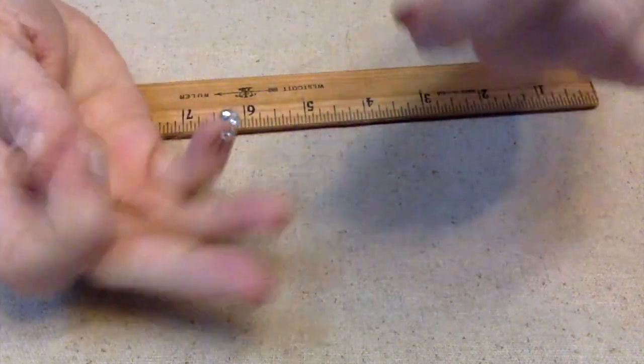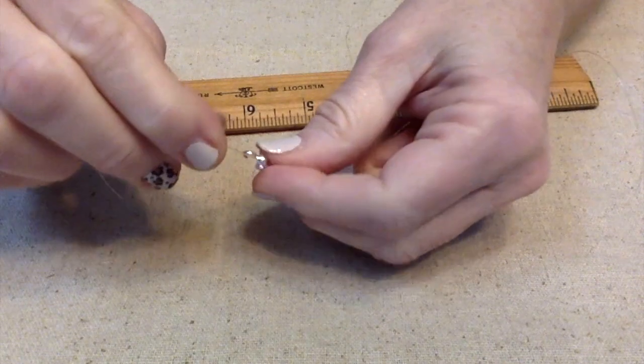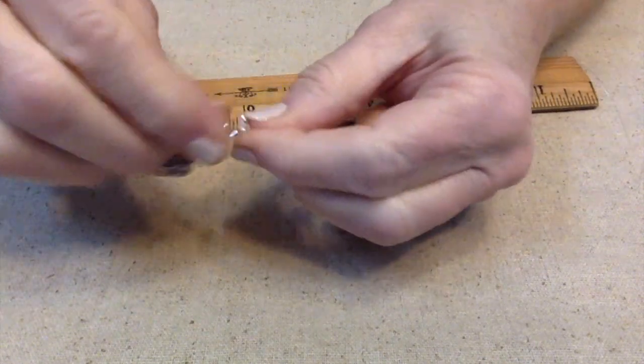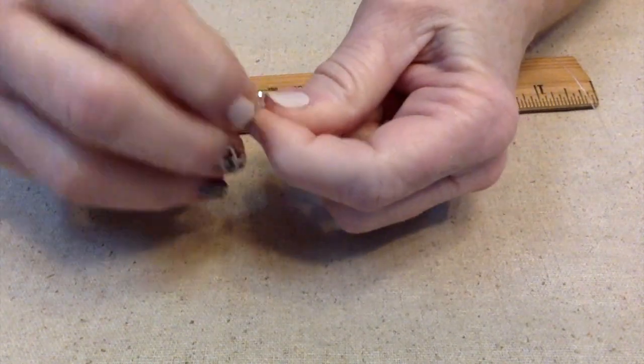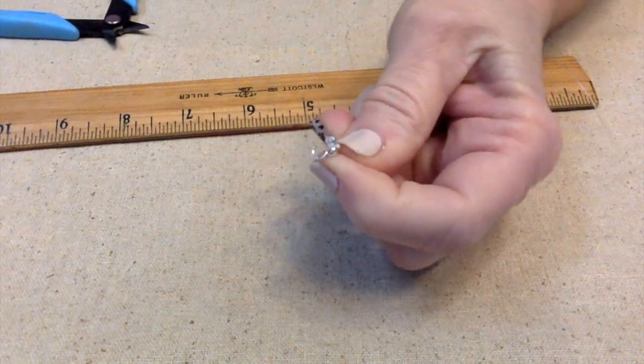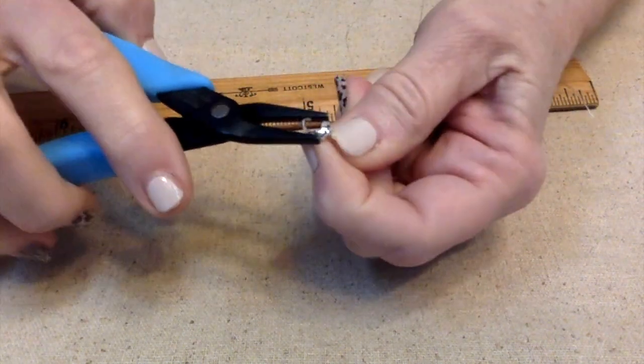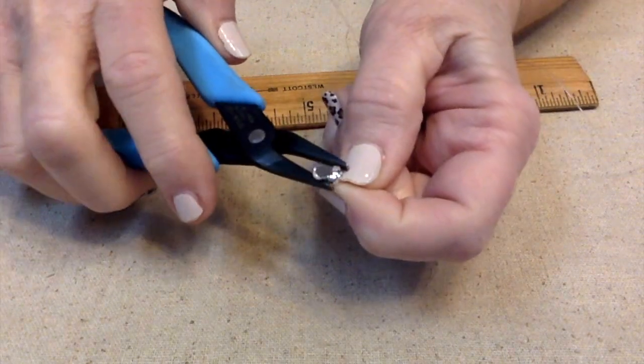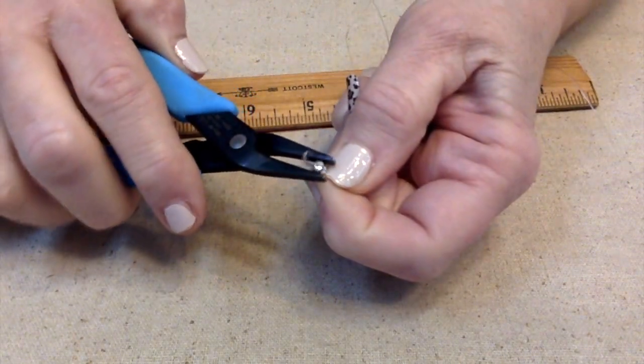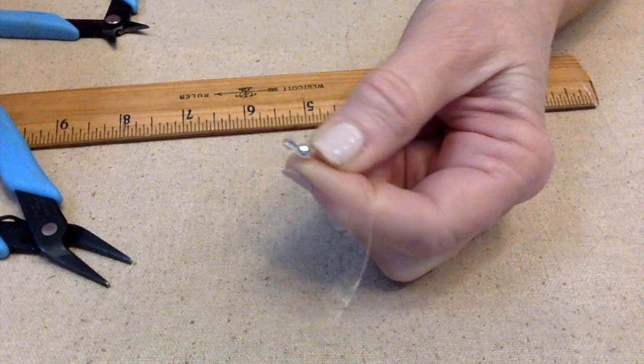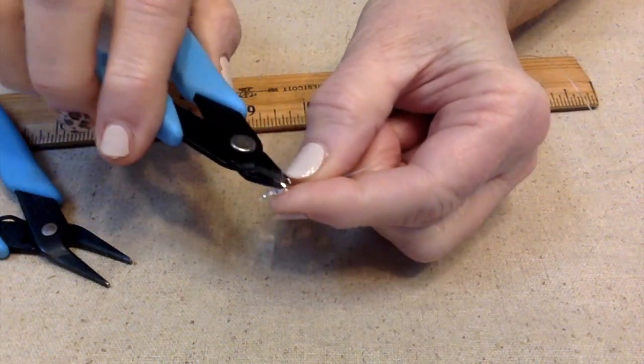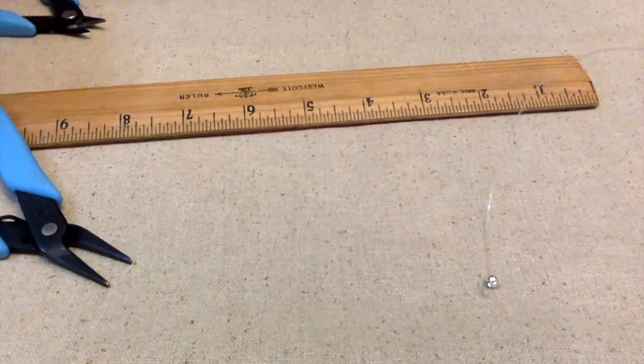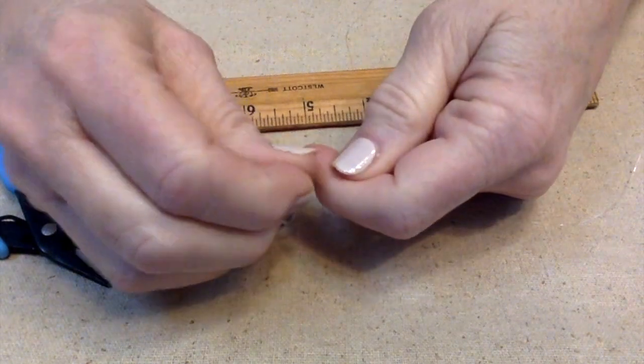Okay, once you've got them tied, you're going to slide your clamshell bead tip, or crimp bead cover, whatever you want to call it, back down there. You're going to close it up. And then you're going to clip that off, make sure nothing is sticking out to scratch you.